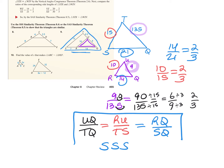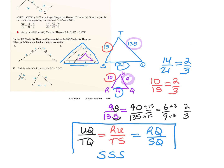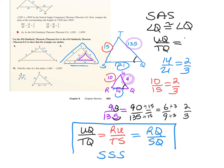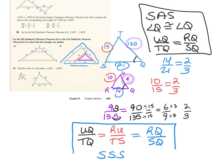This statement of proportionality is your explanation. However, if you didn't want to use SSS, you could also use SAS. You'd say angle Q is congruent to angle Q by the reflexive property, and then show the two ratios — UQ over TQ and RQ over SQ — are proportional. Either method works on this problem, though that's not always the case.